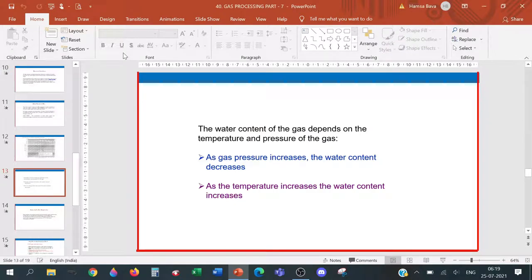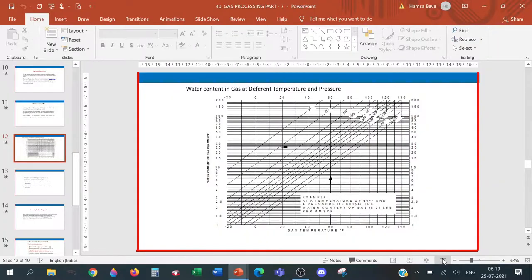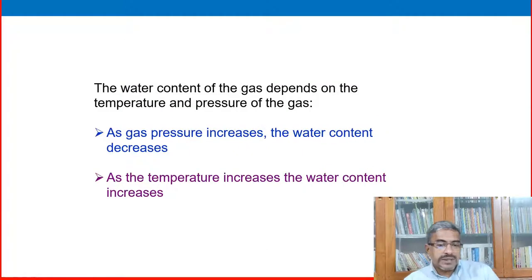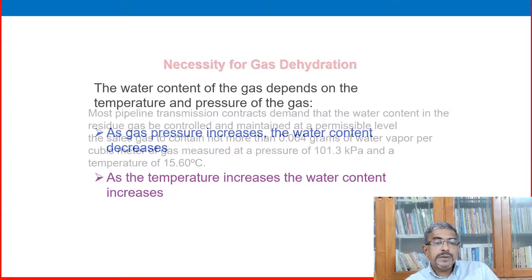Look at this: temperature is increasing, water content increasing. That is the rule. So at 80 degrees, with the same 600 psi, it will be 50 lb per pound per million standard cubic feet. When pressure increases with same temperature, it comes to 800 psi, then it will come to 20 pounds per million standard cubic feet. So pressure and temperature play a very important role in hydrate formation.